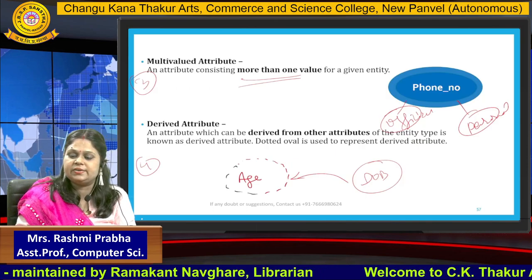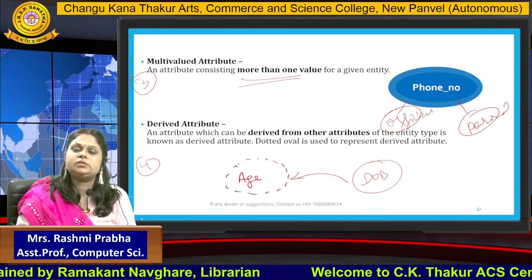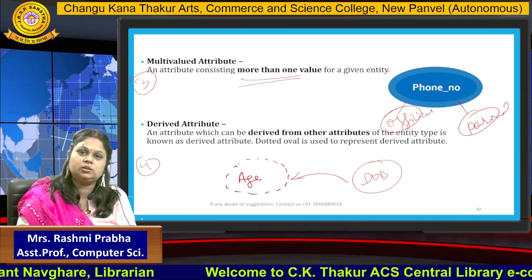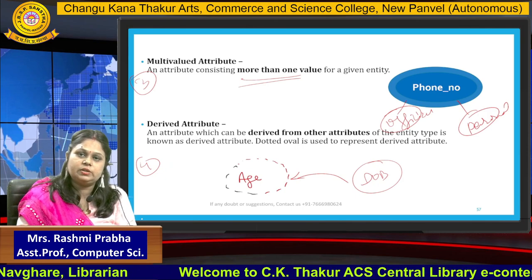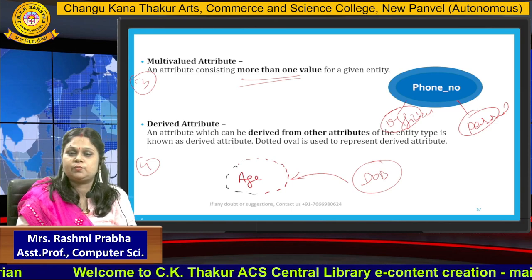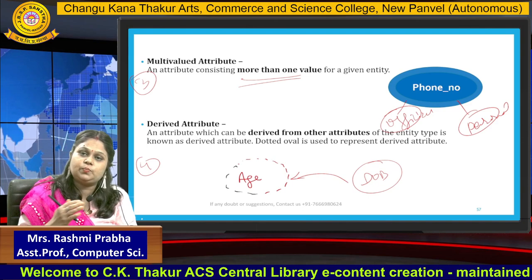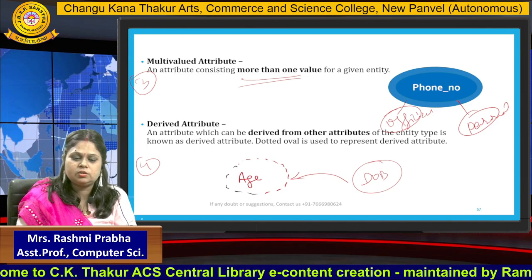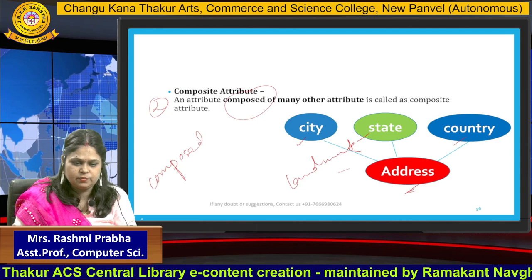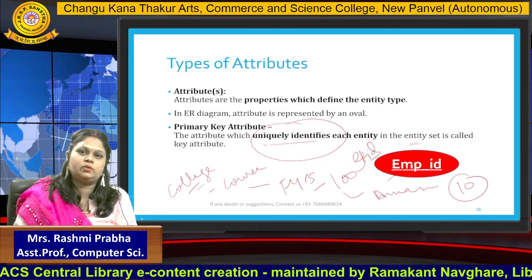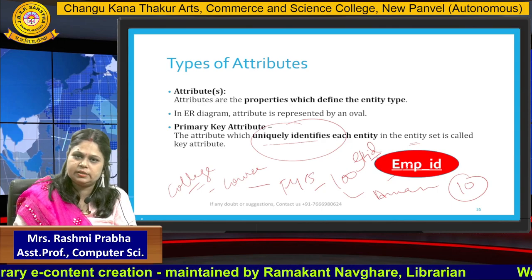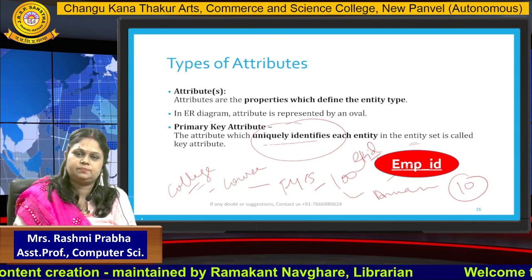These are the four different types of attributes we have seen. In your examination, questions can be theoretical — asking what are the different types of attributes — or they can give you an attribute and ask you to identify which is primary key, which is composite, which is multi-valued, and which is derived. In this video we have seen the different types of attributes. For the next concept, stay tuned for the next upcoming video. Thank you so much.